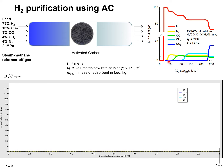The sequence of breakthroughs is as follows: hydrogen is the first component that breaks through, followed by nitrogen, carbon monoxide, methane, and the last component to break through is carbon dioxide. The sequence of breakthroughs is precisely the same as the hierarchies of the binding constants shown in the previous slide.